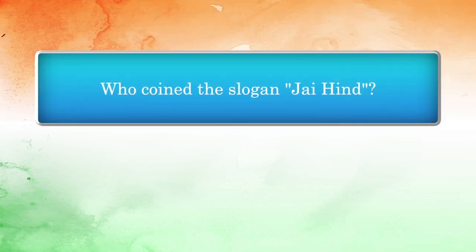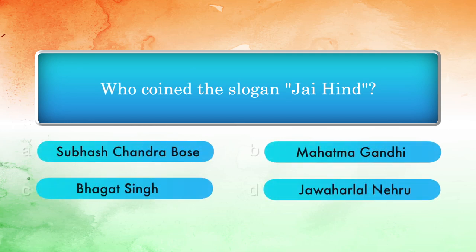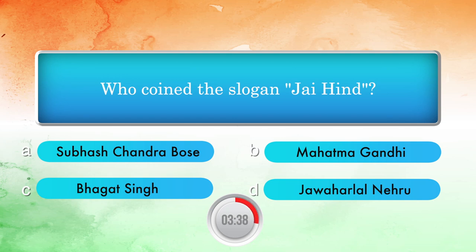Who coined the slogan 'Jai Hind'? Options: Subhash Chandra Bose, Mahatma Gandhi, Bhagat Singh, Jawaharlal Nehru. Answer: Subhash Chandra Bose.